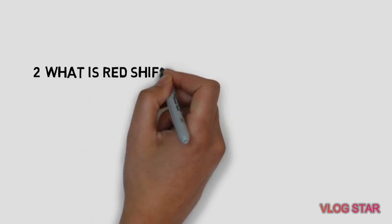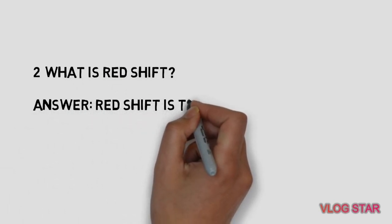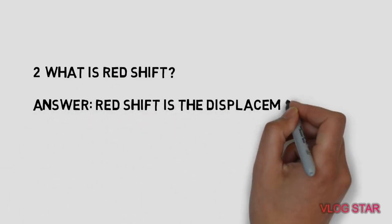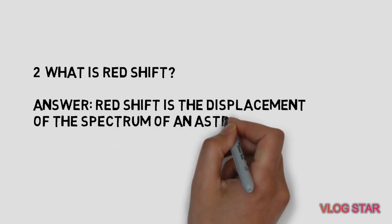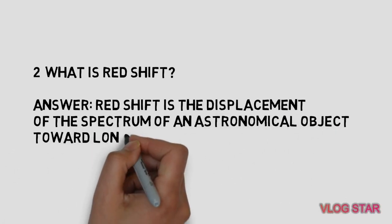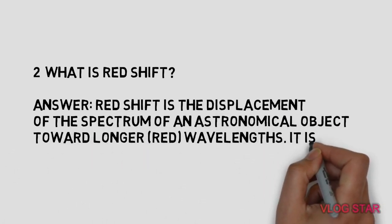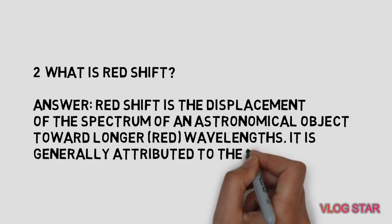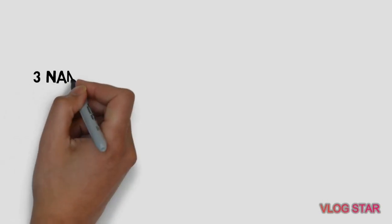What is redshift? Redshift is the displacement of the spectrum of an astronomical object toward longer wavelengths. It is generally attributed to the Doppler effect.